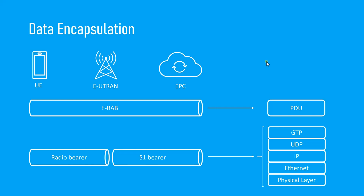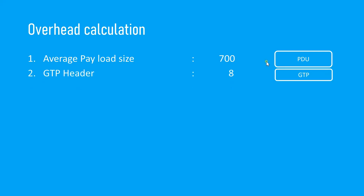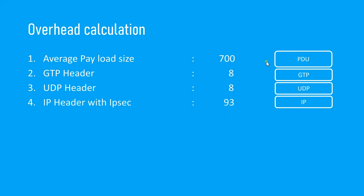Now let's calculate the transport network overhead. The payload data is 700 bytes (PDU size for mobile). It goes to the application layer where the GTP header size is 8 bytes. Then it goes to the transport layer where the UDP header size is 8 bytes. The IP header size is 93 bytes because we are using IP Security (IPsec) with IPv6. Finally, Ethernet encapsulates the data with a 42-byte header.